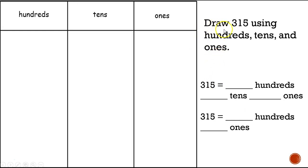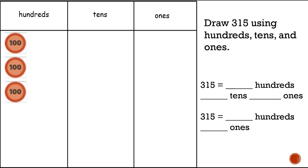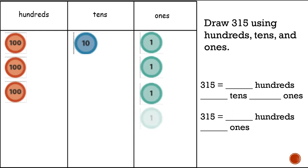Here's another one. We're going to draw three hundred and fifteen using hundreds, tens, and ones. Go ahead and draw that. How many hundreds did you draw? I drew three. How many tens? I drew one. And how many ones? I drew five ones.